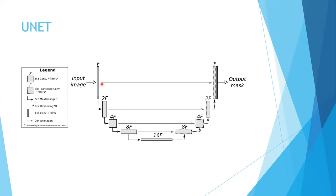Finally, we have a quick look at the U-Net architecture, which consists of a contracting path and an expanding path, typical of an auto-encoder architecture. It uses convolutions, pooling, and upsampling layers to generate the segmentation map.